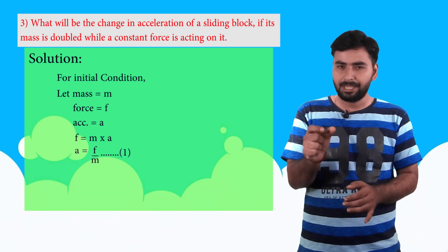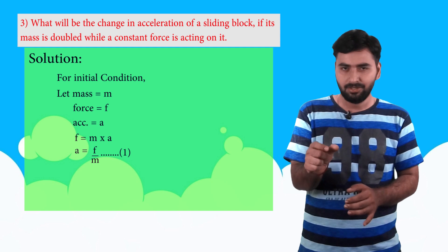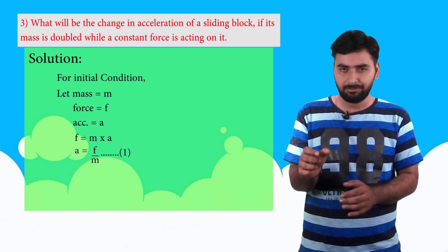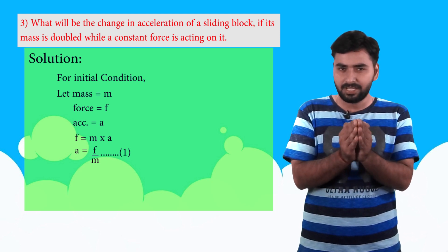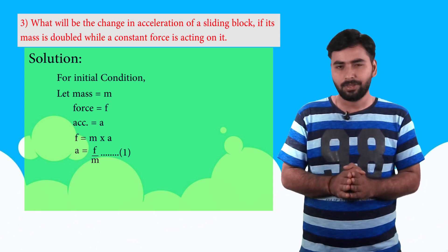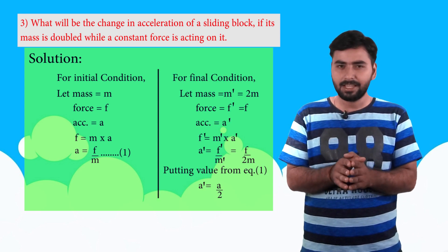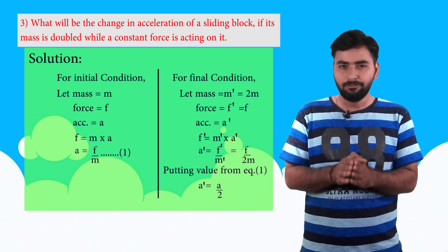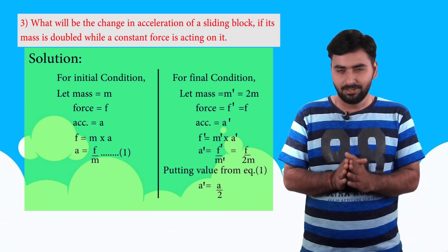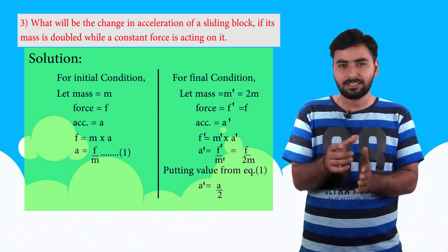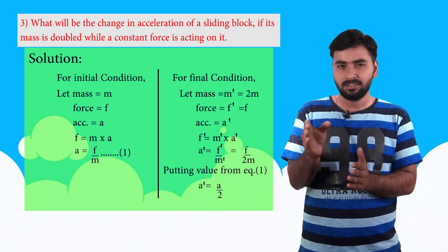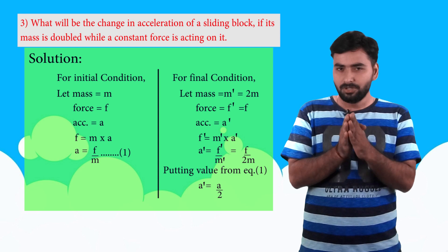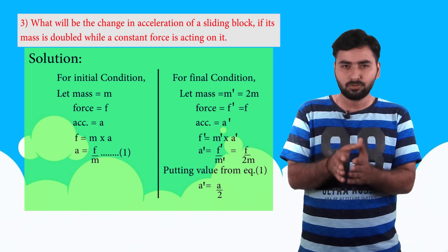Let's solve this in terms of initial and final conditions. So for the initial condition, let mass be m, force be F and acceleration be a. So the force is equal to mass into acceleration, F is equal to ma. For the final condition, force is mass into acceleration, so acceleration is force upon mass. That is a dash is equal to F dash upon m dash.